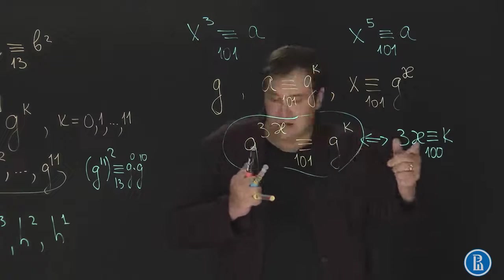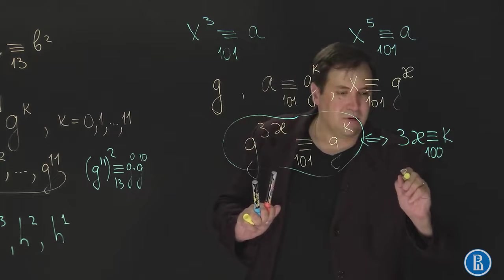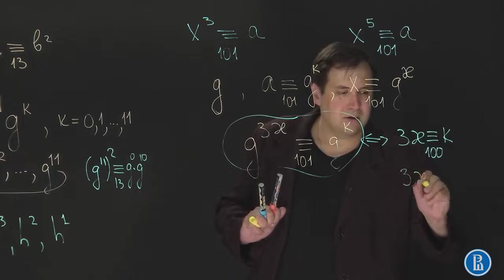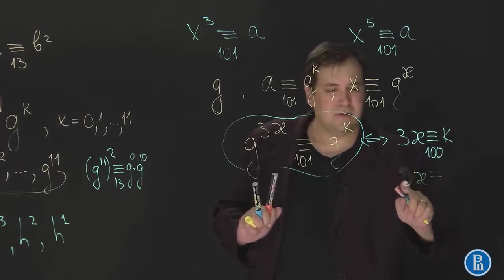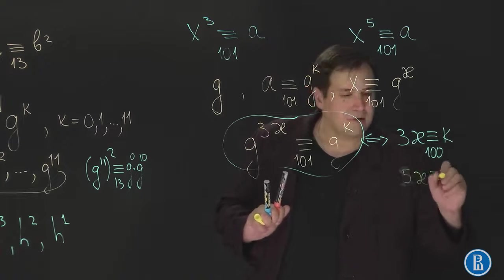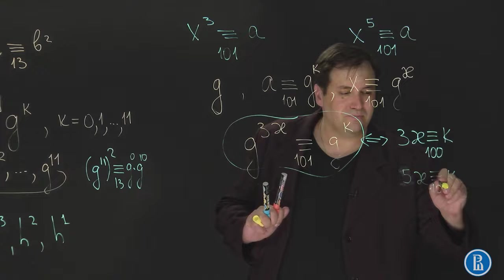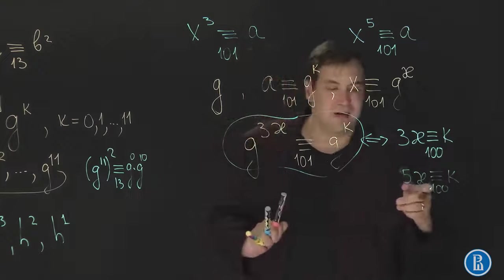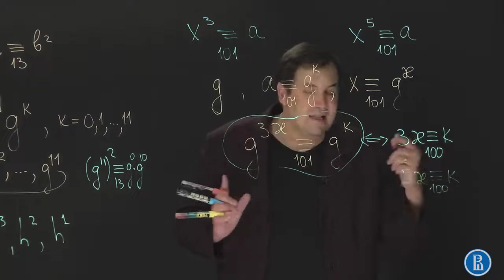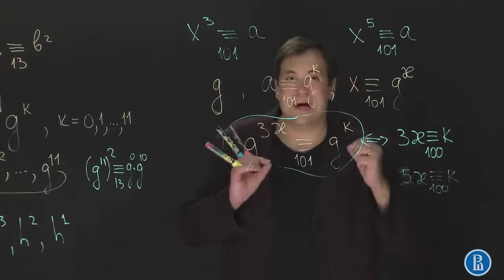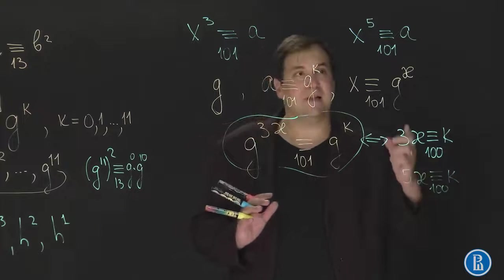But what if the degree of this equation was 5 not 3? In this case we would obtain on the last step not such congruence, but 5 kappa congruent to k modulo 100. But 5 and 100 are not mutually prime, actually 100 is divisible by 5.